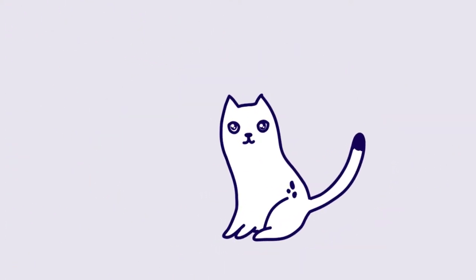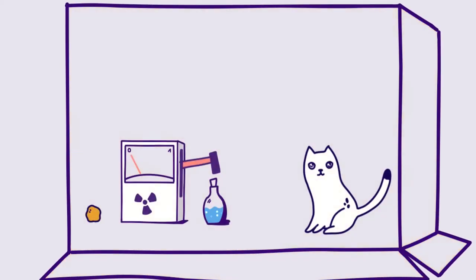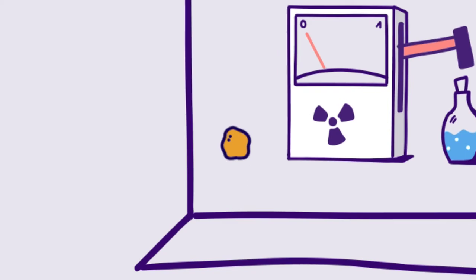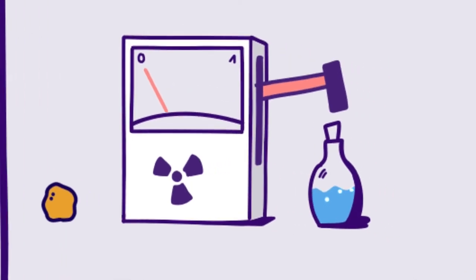Let us assume that the mentioned cat is in a box. In this box, one also finds a small amount of radioactive substance, a detector, a hammer and a jar with poison.